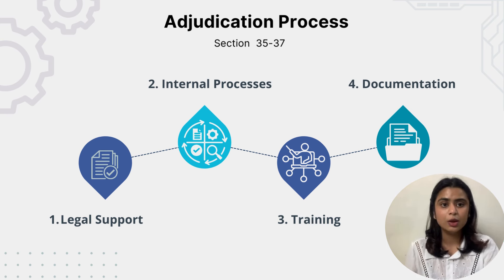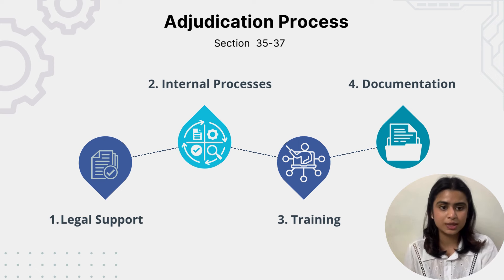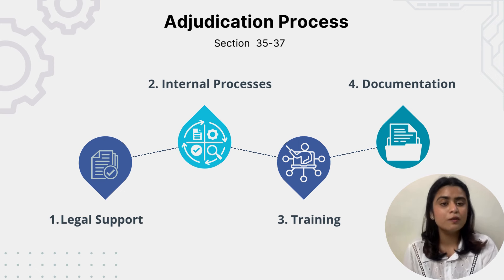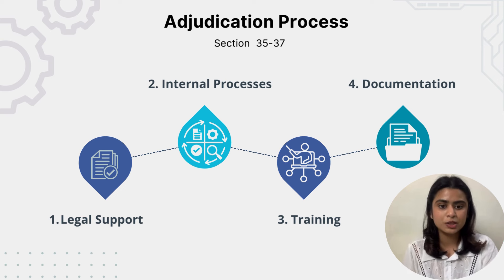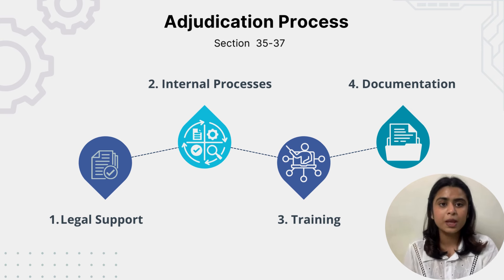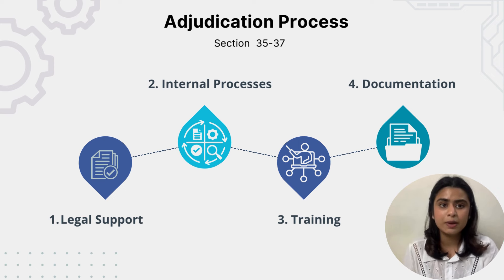Third, training. We need to conduct training sessions on the adjudication process, ensuring relevant staff are well-versed. For example, Accenture conducts regular training for its legal and compliance teams on navigating adjudication processes under various regulatory frameworks. Training ensures that the organization is prepared to handle adjudication efficiently, minimizing potential disruptions.